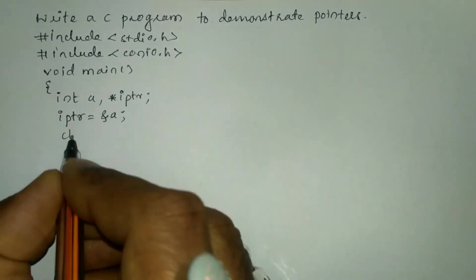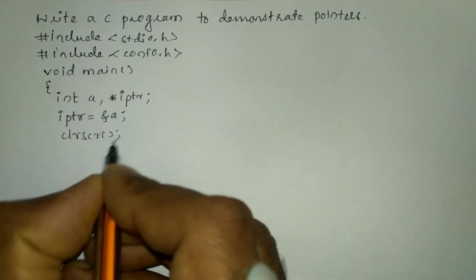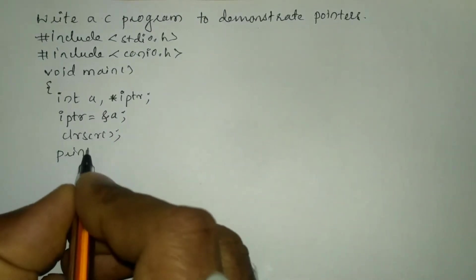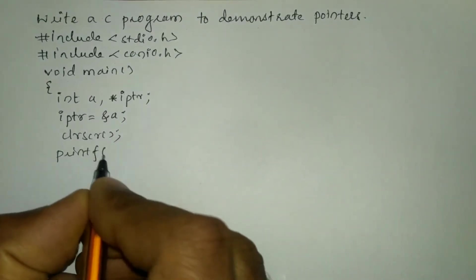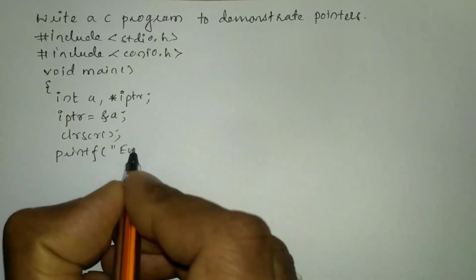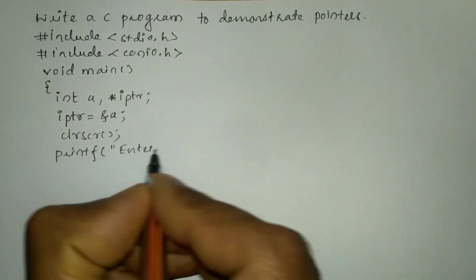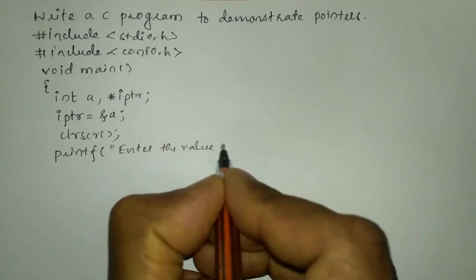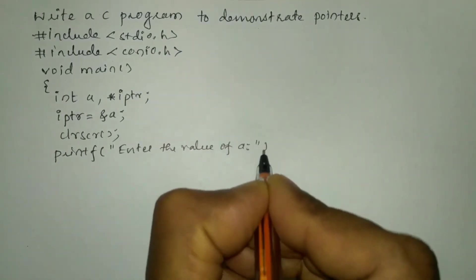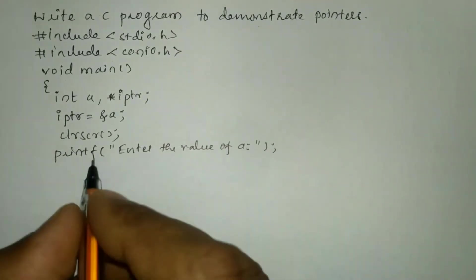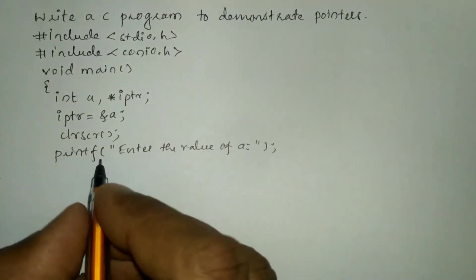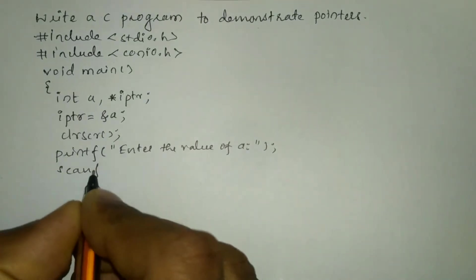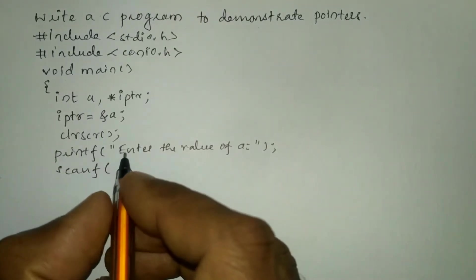Next I am going to write the clrscr function and then I am going to write a printf statement. In double quotation marks I will ask the user to enter the value of a, then put semicolon. Now we are going to receive the value from the user through the keyboard using the scanf function.